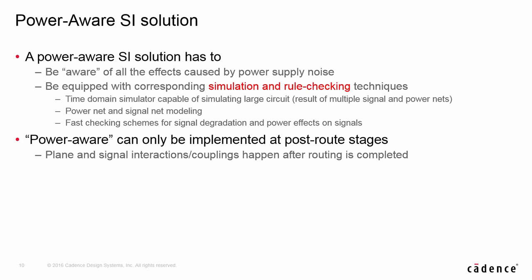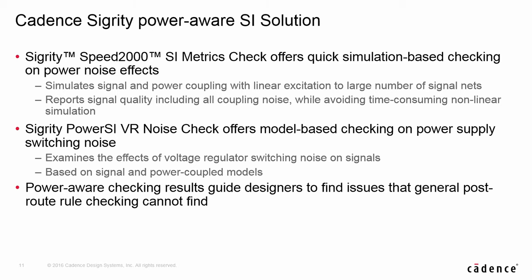From the previous discussion, we can see that our only option is to go with simulation and modeling on power and signals. But SSN-type simulation throughout the environment with non-linear models requires special field solvers to handle power planes and shapes, therefore has performance issues and cannot be used for checking purposes. Designers need fast checking tools to quickly identify potential design issues. Do we have a tool for power-aware design checking? The answer is yes. Cadence Sigrity provides SI metrics check for the complete power-aware solution. It can check and report general classic SI issues and power-noise induced SI problems.